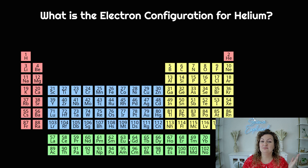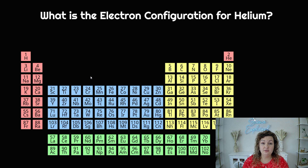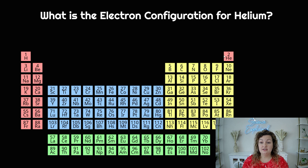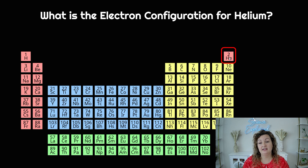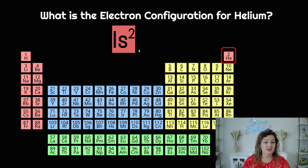So let's just do some examples so we can get the feel for it. What is the electron configuration of helium? First thing we need to do is look for where is helium — helium is right here. So we would go through this and say: 1s1, 1s2. This is where I stop — I stop at the atom I'm looking for. I'm looking for helium, I need to stop here and write that down: 1s2. So that is all I'm writing down for helium. Helium is really simple.